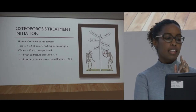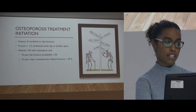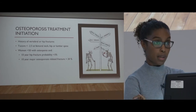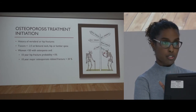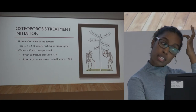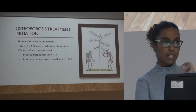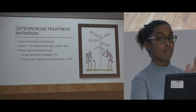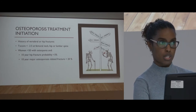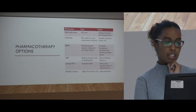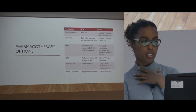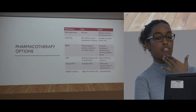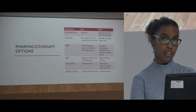The guidelines suggest that you should initiate osteoporosis treatment for patients who have a history of vertebral and hip fractures, if their T-score is minus 2.5 at the femoral neck, hip, or lumbar spine, or in any woman over the age of 50 with osteopenia on their DEXA scan who has a 10-year hip fracture probability of more than 3% on the FRAX predictor tool, or a 10-year major osteoporosis-related fracture risk of more than 20%. Those patients you should strongly consider treating.